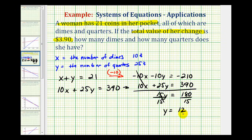And since y is equal to 12, this means we have 12 quarters. And now we have to determine how many dimes we have. So we can use the equation x plus y equals 21 and substitute 12 for y. So we'd have x plus 12 equals 21. Subtract 12 on both sides. So we have x equals 9.